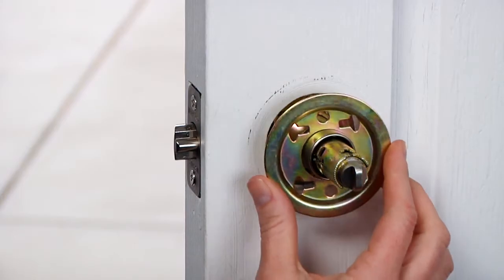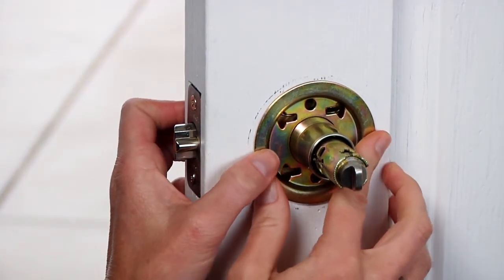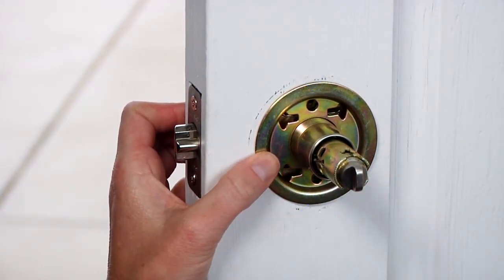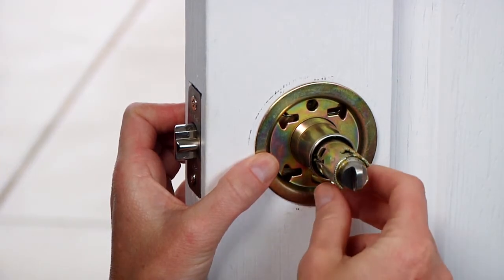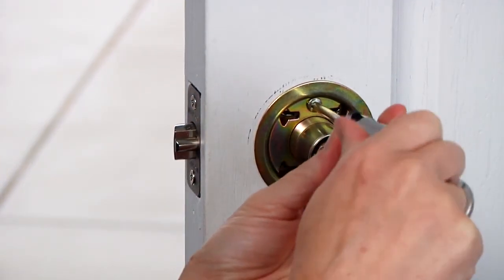Place the mounting plate over the main lock body and against the door. With the mounting holes on the top and bottom of the plate, install the longer mounting screws with the Phillips screwdriver and tighten securely.